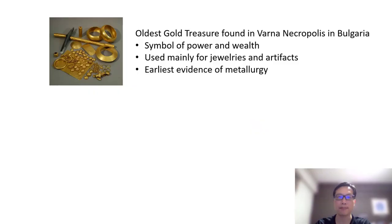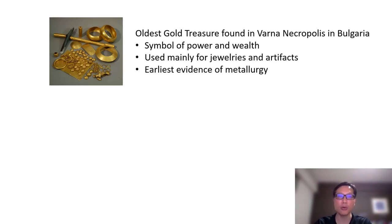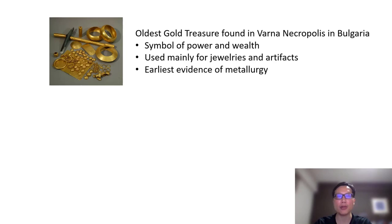Let's take a trip through time. One of the oldest gold treasures ever found was discovered in the Varna necropolis in Bulgaria. From the items found among the treasure, it offered a glimpse of how this ancient civilization, 6,000 years ago, viewed gold. So even back then, gold was used as a symbol of power and wealth. Most of the gold artifacts were found in only a few of the tombs, and the items were fashioned as either jewelleries or symbols rather than practical tools. Archaeologists had also discovered evidence of metallurgy where gold was combined with other metals like copper and silver to form alloys.